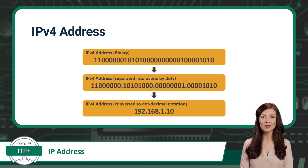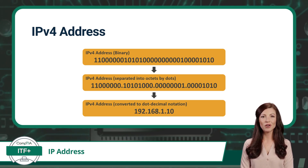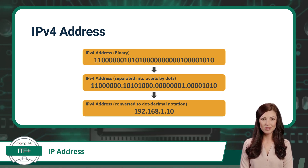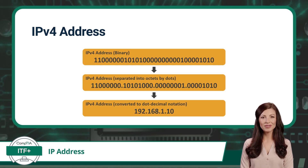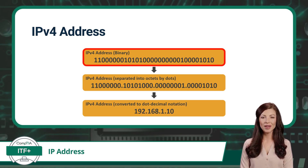Currently there are two versions of IP addresses in use: IPv4 and IPv6. IPv4, which stands for Internet Protocol version 4, is the older and more widely adopted version. An IPv4 address identifies a device in an IPv4 network. IPv4 addresses use a specific type of notation called dot decimal notation — a way of displaying a big number in manageable chunks. Each IPv4 address is 32 binary digits long.